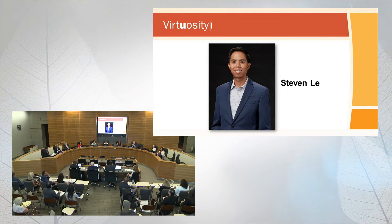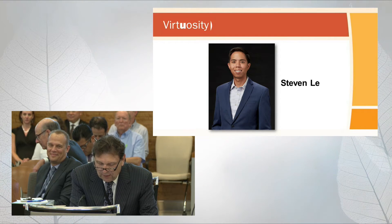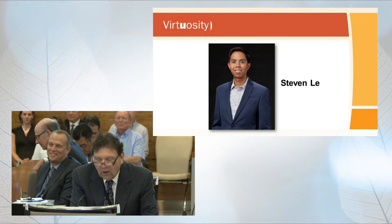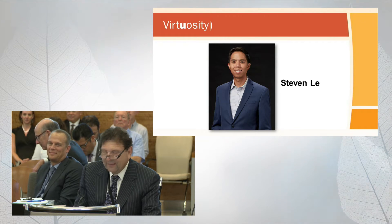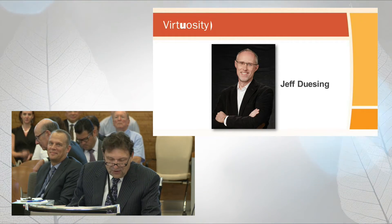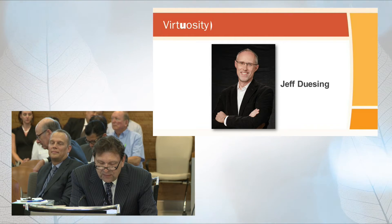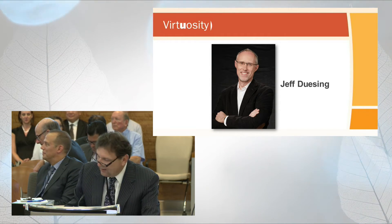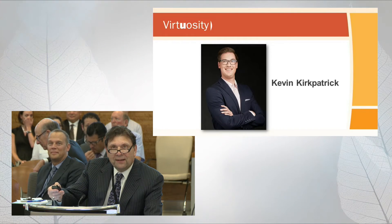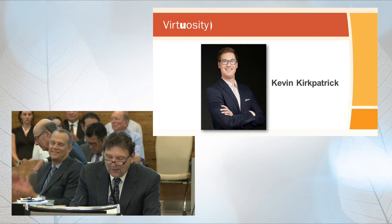Steven works in Benefits and Services — our largest branch — on the benefit adjustment team. He is primarily responsible for processing post-retirement excess earnings workload calculations, requiring initiative, independence, good judgment, and interpreting and applying laws in a very complex area. Jeff Dusing works in Administrative Services as our organizational training coordinator, analyzing and developing career development processes in relation to CalSTRS competencies. Kevin, who is not here today because he's working in Southern California, was really our first hybrid specialist.